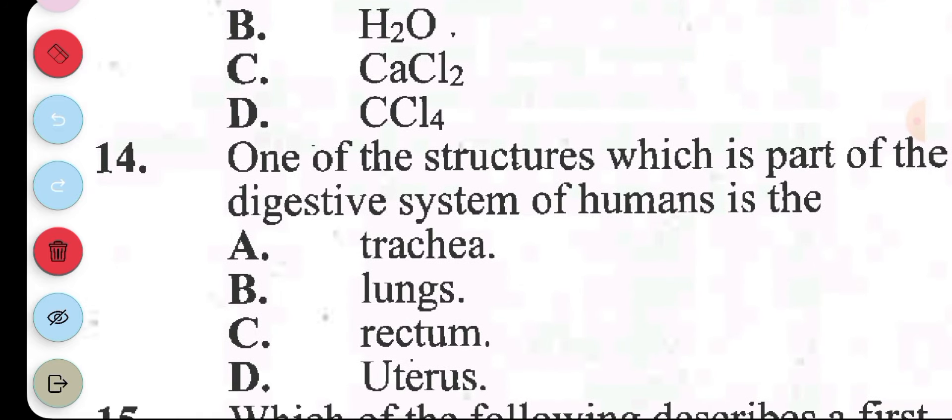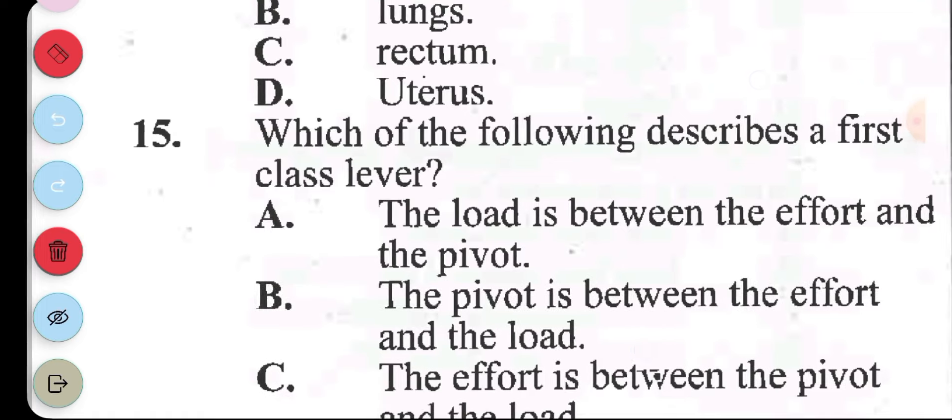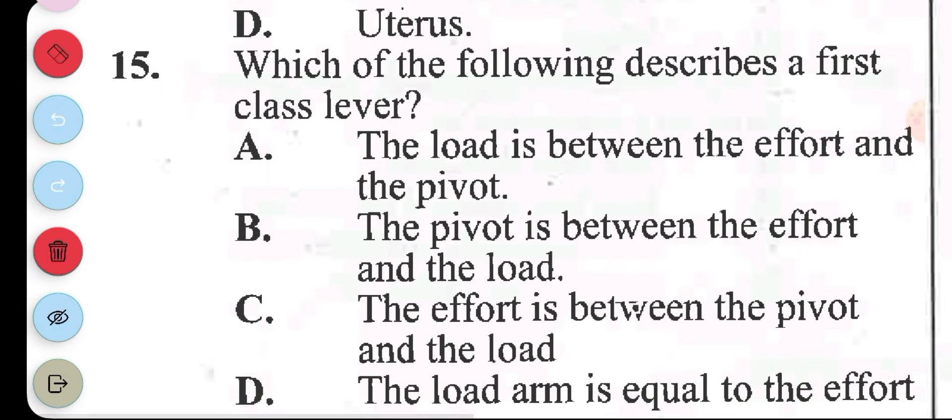Question 14: one of the structures which is part of the digestive system of humans is, okay, so with this, the answer is rectum, so 14 C. Question 15: which of the following describes a first class lever? With the first class lever, the pivot is in the middle, the pivot is in between. Looking through, I think we have B here. The pivot is between the effort and the load. So 15 is B.